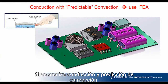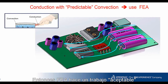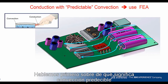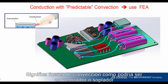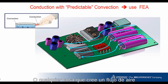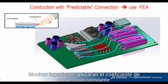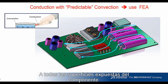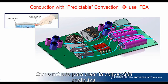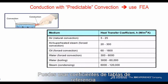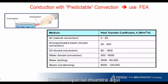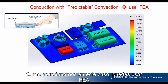If analyzing conduction and predictable convection, then FEA does an acceptable job. Let's first talk about what predictable convection means. It means forced convection, such as from a fan or a blower, or anything that creates airflow when you know the convection coefficient — i.e., predictable. Many engineers would apply a constant convection coefficient to all the exposed surfaces of the component. You can use coefficients found in reference tables or calculate one by hand. In this case, you can use FEA.